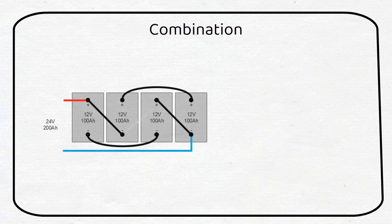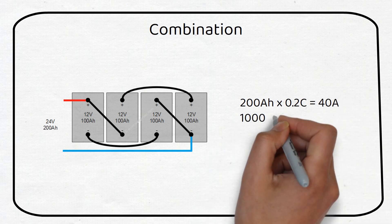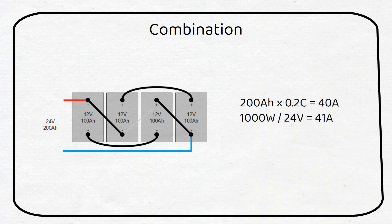We can add series and parallel together. If you have four 12 volt 100 amp hour lead acid batteries and a 1000 watt 24 volt inverter, you can make one big 24 volt 200 amp hour battery. If we calculate the C-rate for the system it would be 200 amp hours times 0.2C is 40 amps. The maximum current demand from the inverter will be 1000 watts divided by 24 volts is 41 amps. This is a properly sized system that will give you a long battery lifespan.